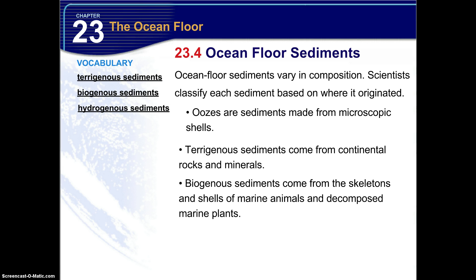Oozes are sediments made from microscopic shells. Pterygious sediments come from continental rocks and minerals. Biogenous sediments come from the skeletons and shells of marine animals and decomposed marine plants. Certain microscopic marine organisms such as diatoms and radiolarians form shells composed of silicon dioxide. The remains of these abundant marine organisms precipitate into the ocean floor as silica ooze, which then forms the sedimentary rock known as chert.